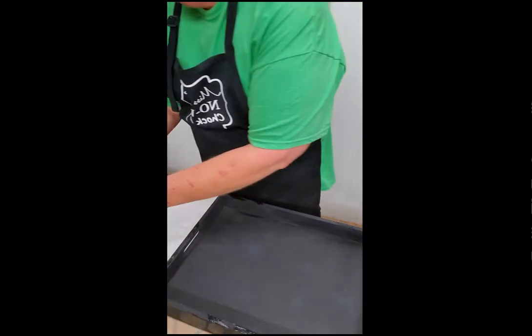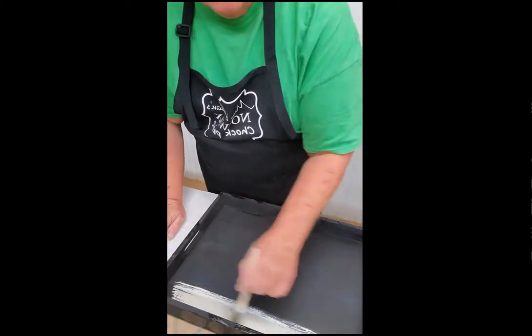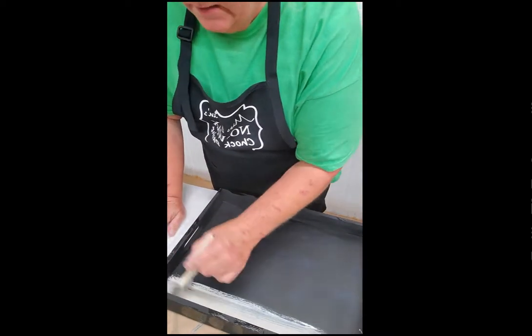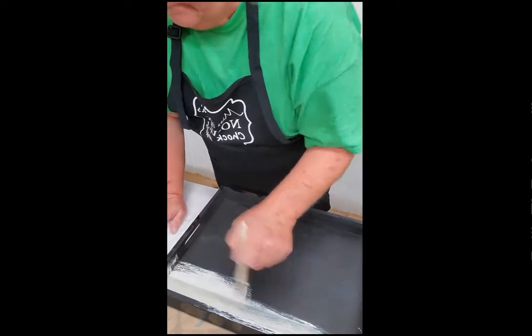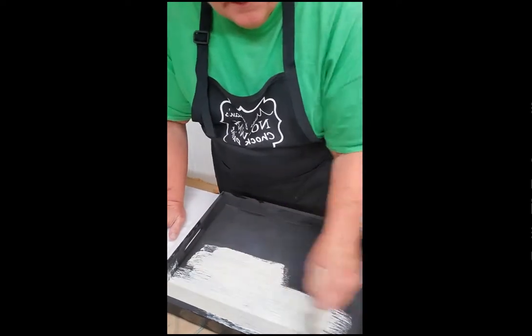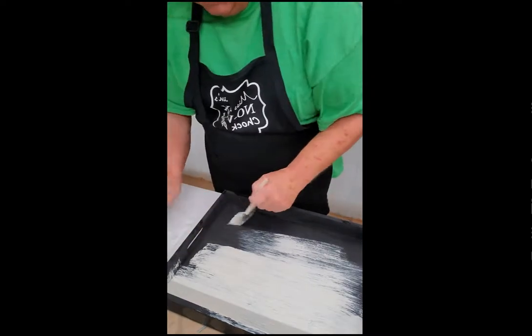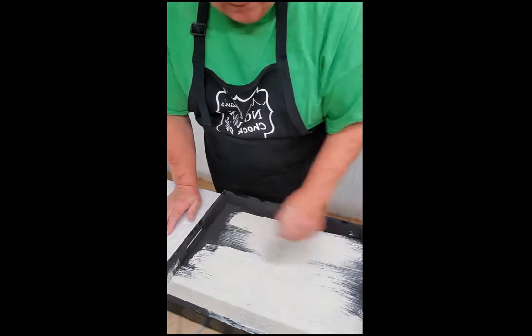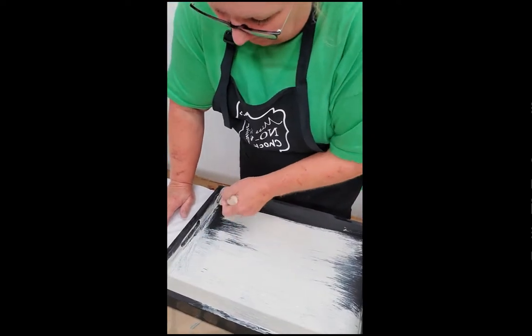Now I'm going to let that dry a little bit while I paint the inside of this tray with my cobblestone to give it its aged look. So I'm just going to give it a quick rustic coat.